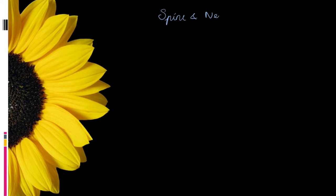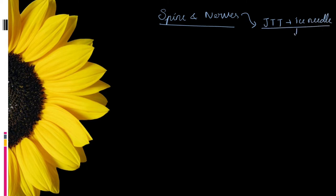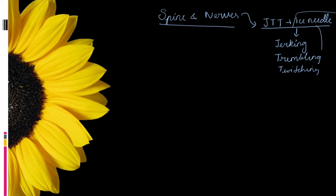Now let's see the spine and nerve symptoms of Agaricus. Babu will have what can be remembered as JTT plus ice needles: J for jerking, T for trembling, and another T for twitching, along with ice prick needle sensation all over the body. These symptoms are found generally throughout the body.